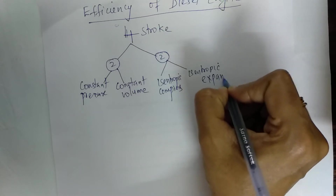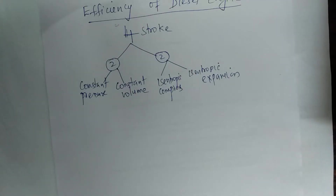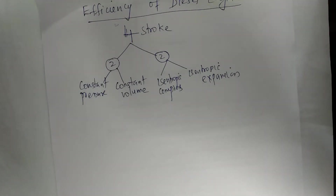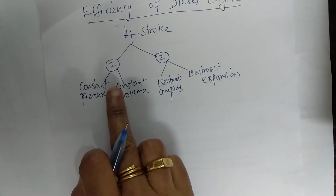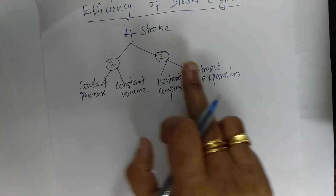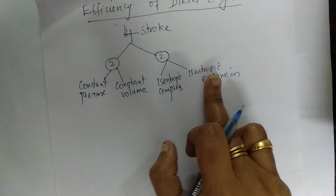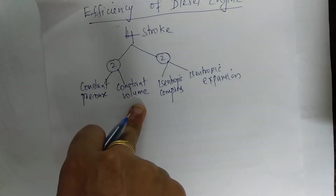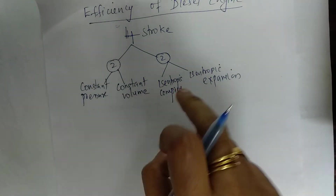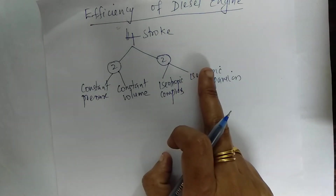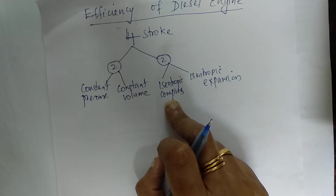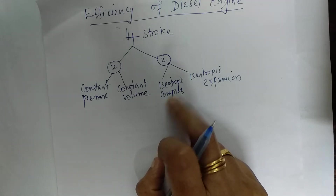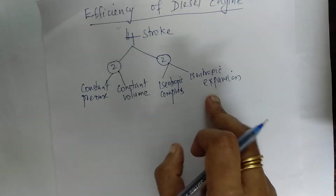As in the petrol cycle, in the diesel engine the piston moves four times to complete one thermodynamic cycle. Among those four strokes, one process takes place at constant pressure and another at constant volume, and there are two isentropic processes — one isentropic compression and one isentropic expansion.